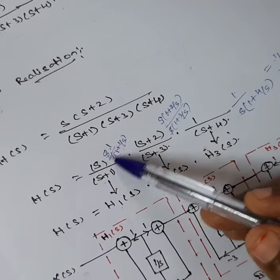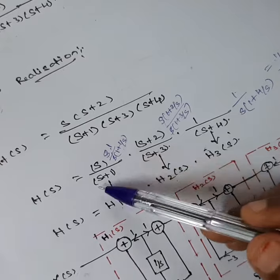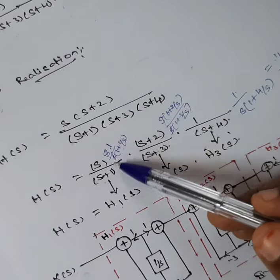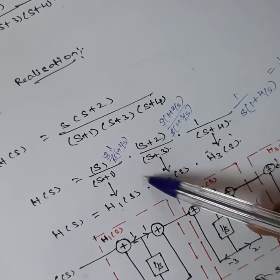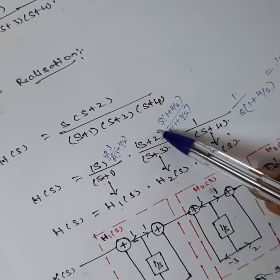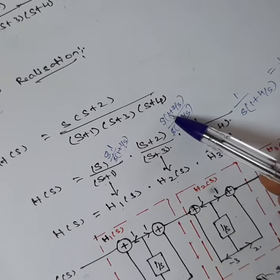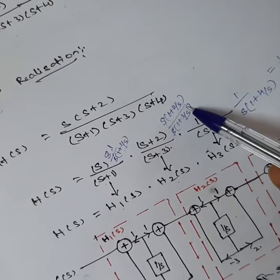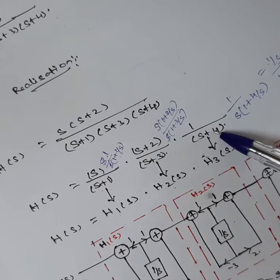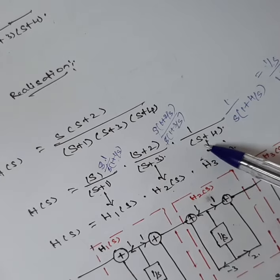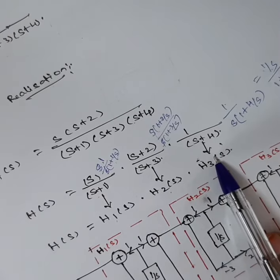Converting to standard form by taking s common: H1(s) = 1/(1 + 1/s), H2(s) = (1 + 2/s)/(1 + 3/s), and H3(s) = 1/(1 + 4/s). These are H1, H2, and H3 in standard form.